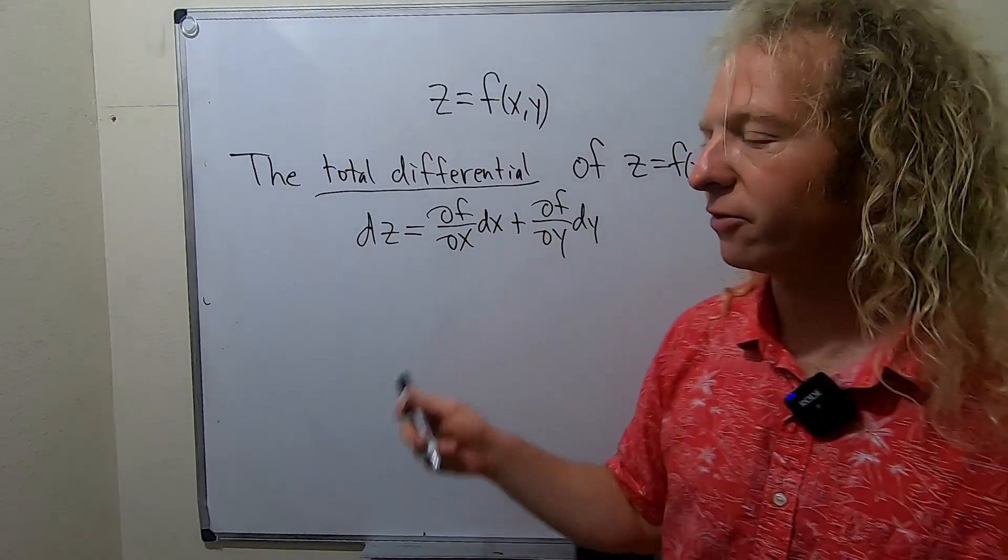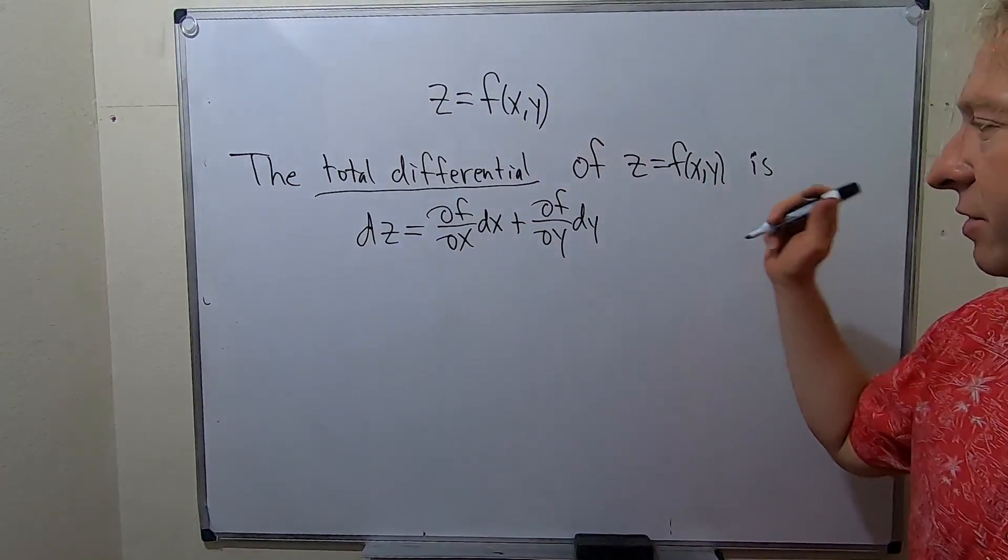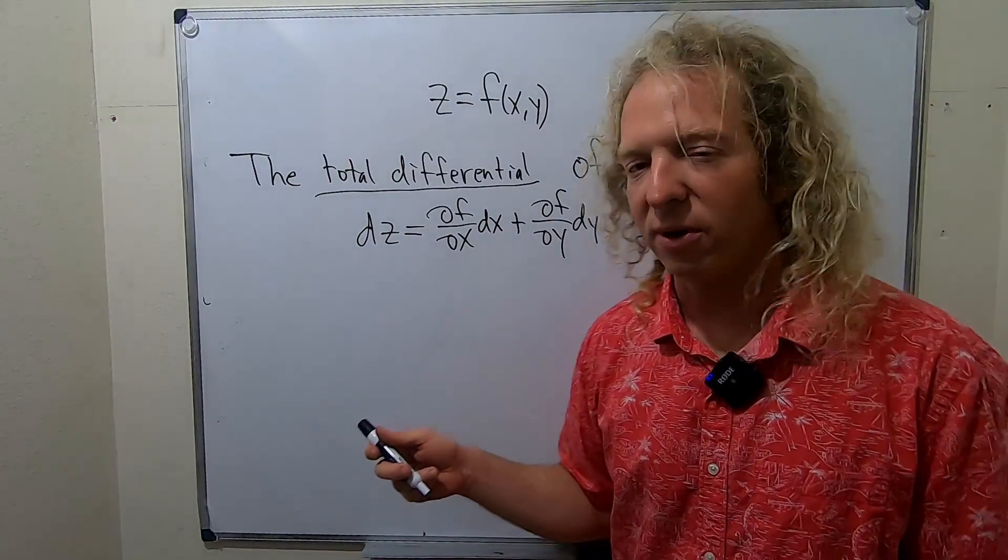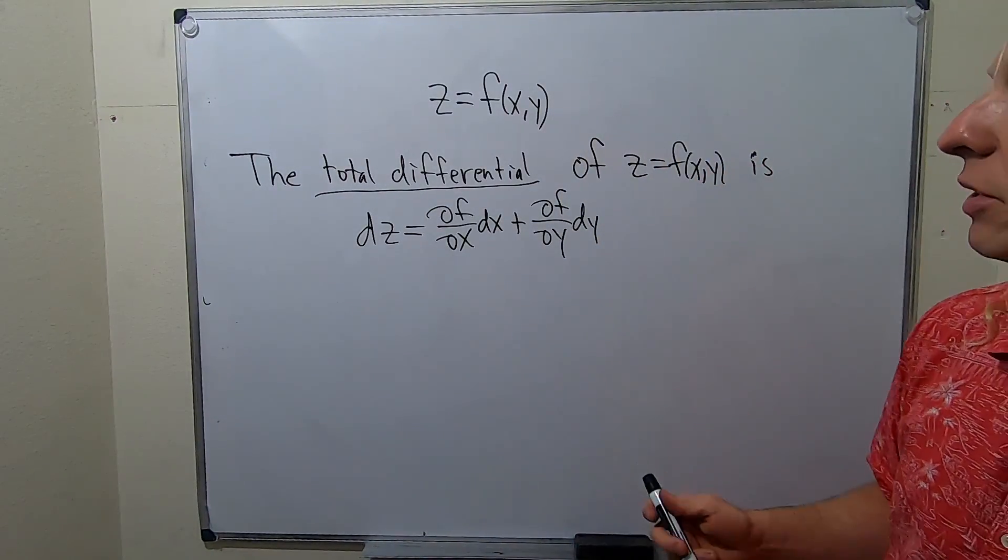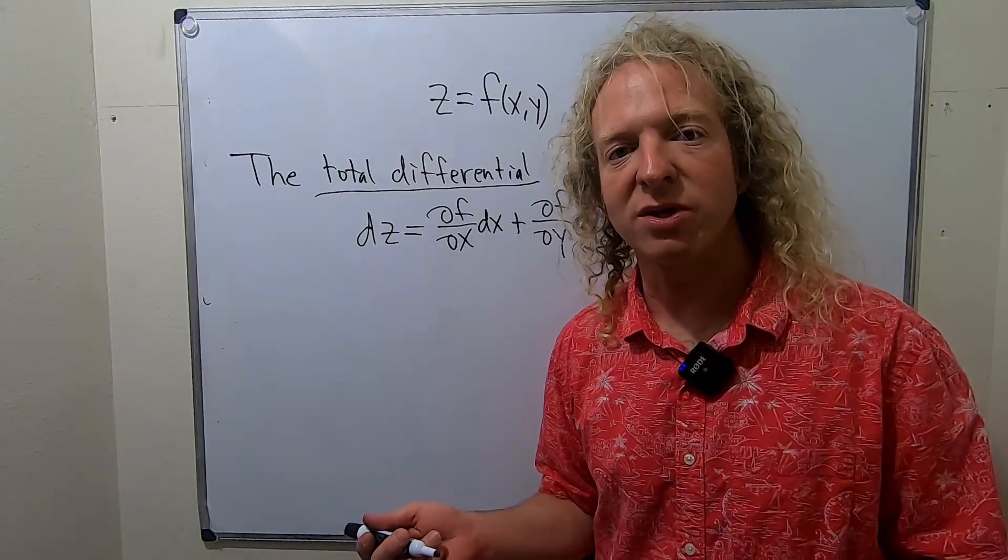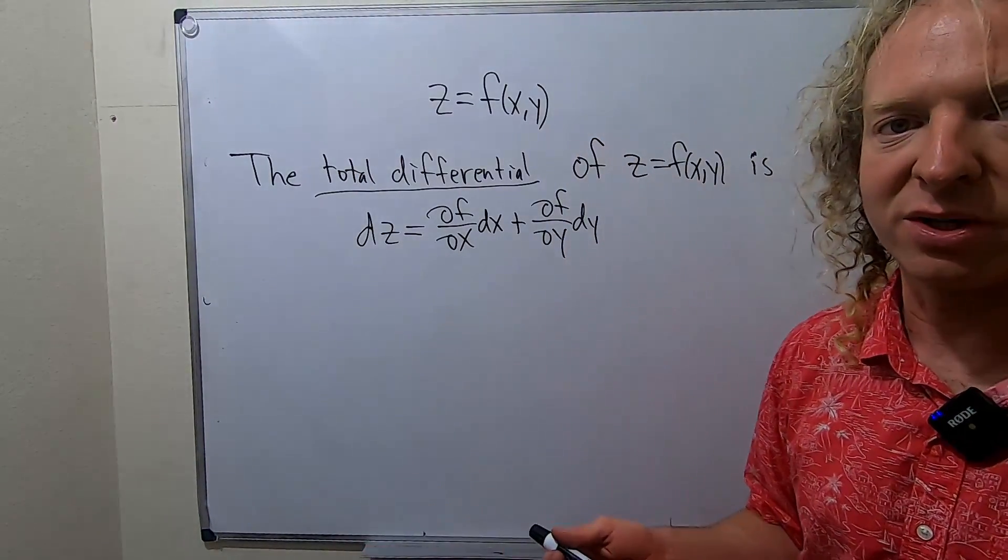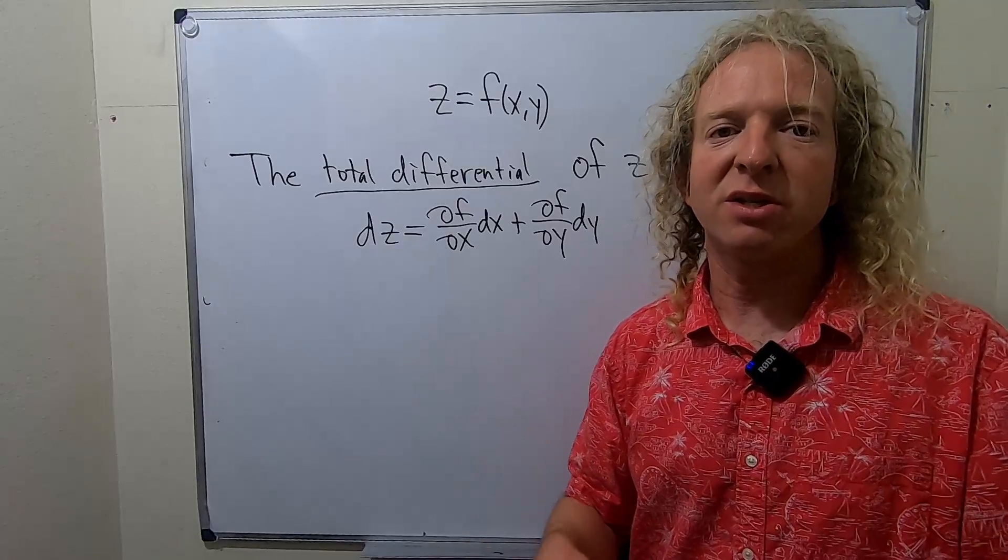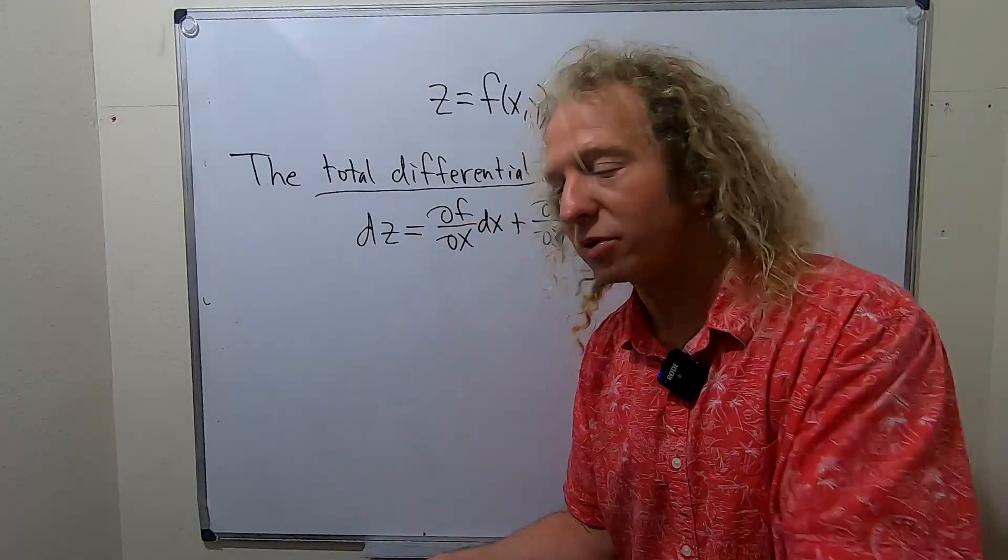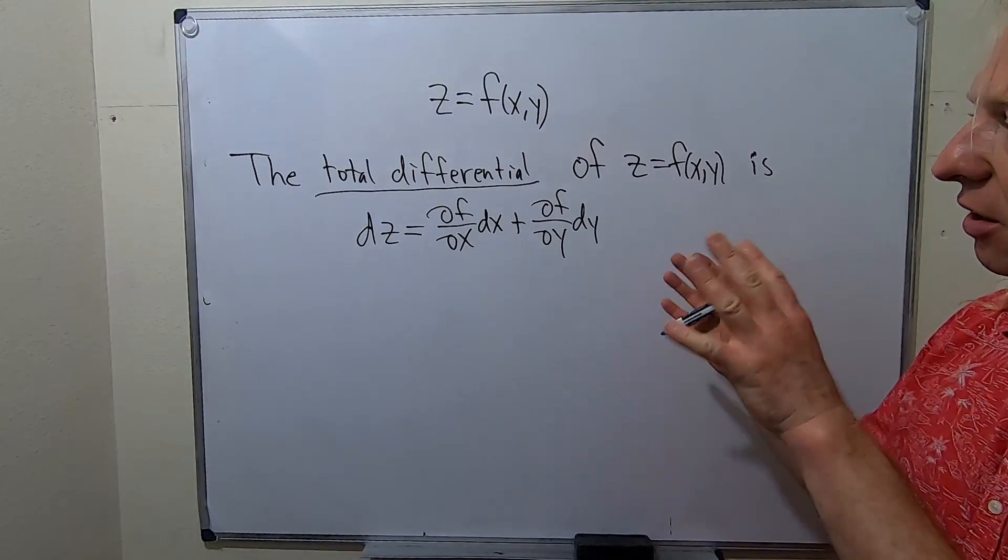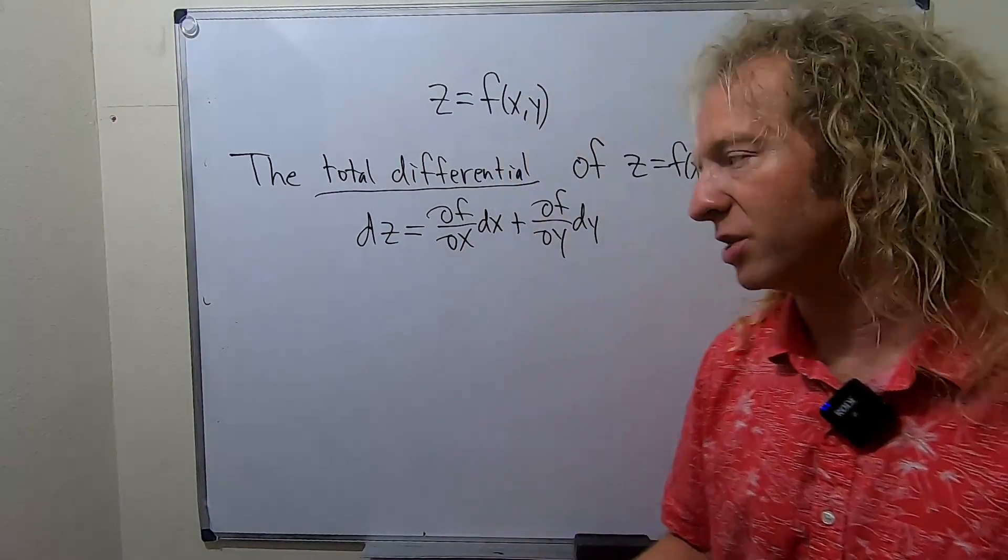Again, this is called the total differential of a function. What is this for? There's a couple different places where this comes up. One place is differential equations. If you've studied exact differential equations, an exact differential equation is an equation which is the total differential of some function. You use this idea somewhat to solve those types of equations.